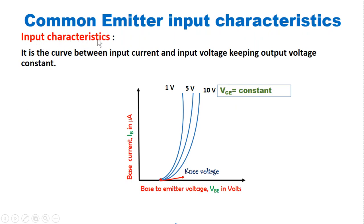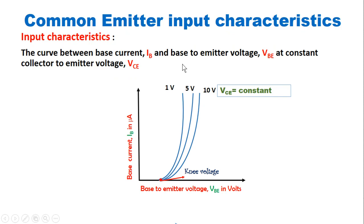What is input characteristics in a transistor? Input characteristics is the curve between input current and input voltage keeping output voltage constant. In case of common emitter connection, the input characteristics is the curve between input current — that is base current IB — and input voltage — that is base to emitter voltage VBE — at constant output voltage, that is collector to emitter voltage VCE.